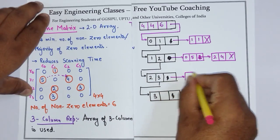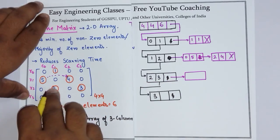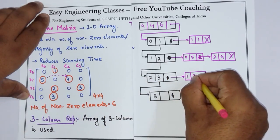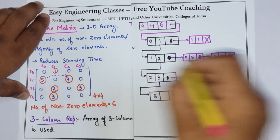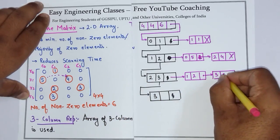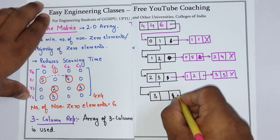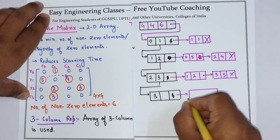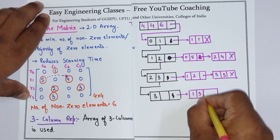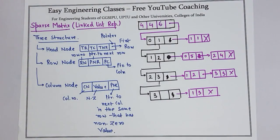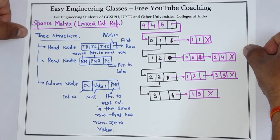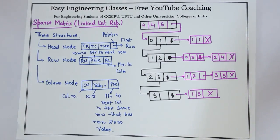Similarly, the next row will point to column 1 with value 2, and then point to column 3 with value 3, then null pointer. The last row will point to column 1 with value 3, and then null pointer. This is how you represent a sparse matrix using linked list representation. Thank you for watching the video, please subscribe to the YouTube channel for more tutorials on data structure and other computer science subjects.